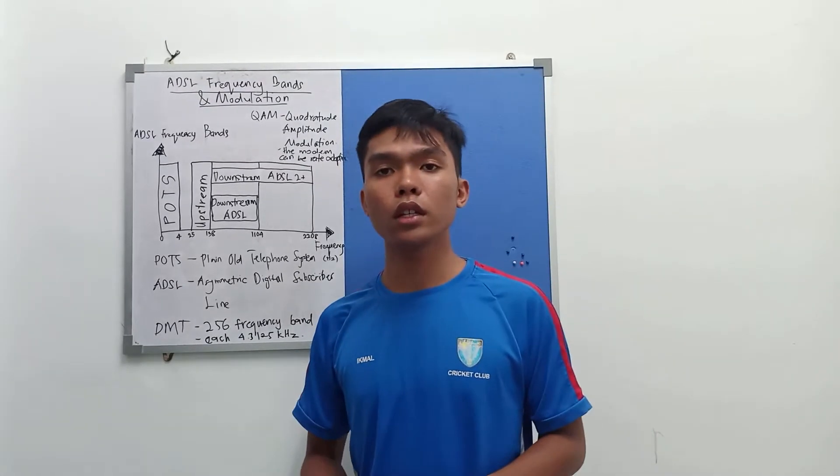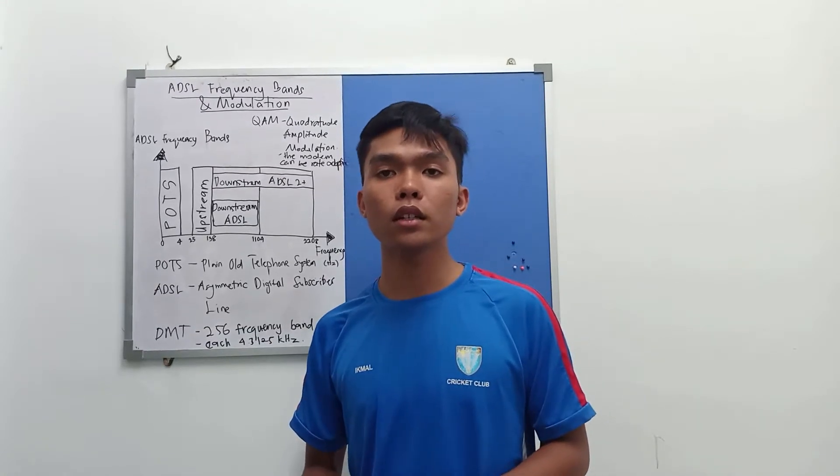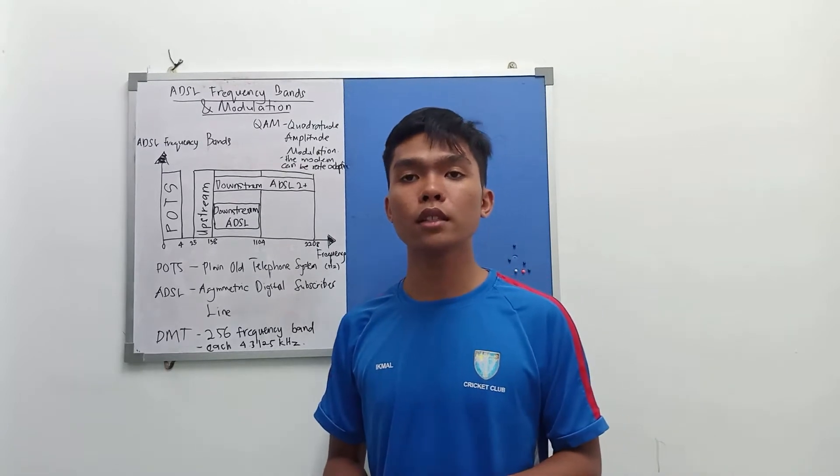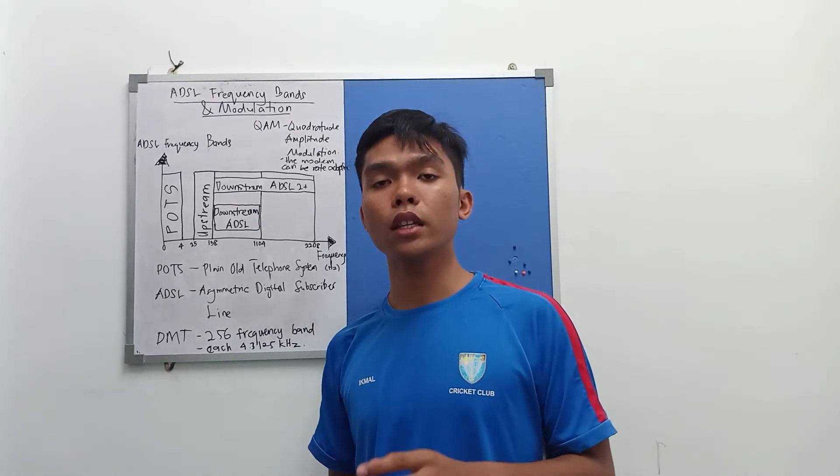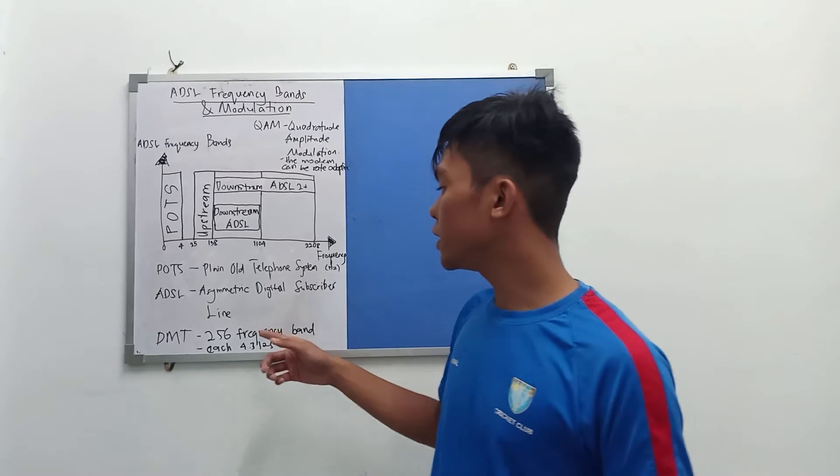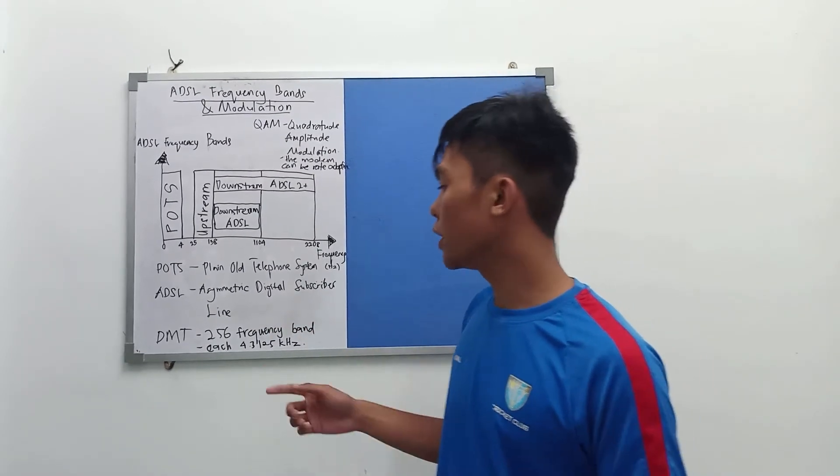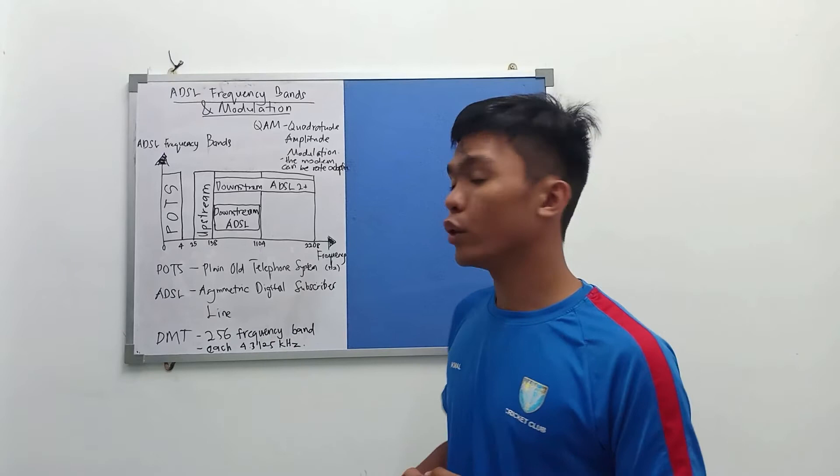Discrete multi-tone is a method of separating a digital subscriber line signal, so that the usable frequency range will be separated to 256 frequency bands, and each of them is 4.3125 kHz.